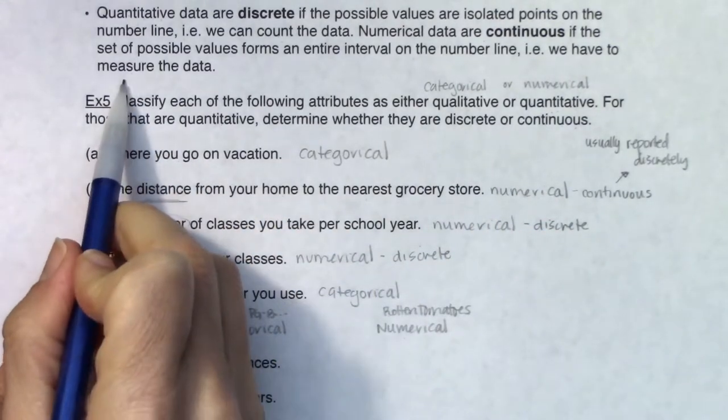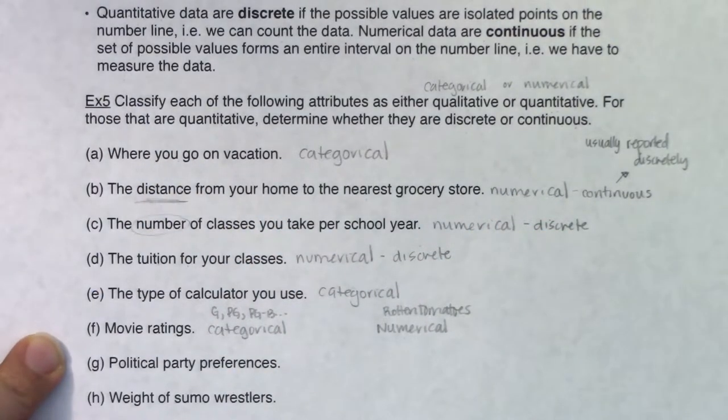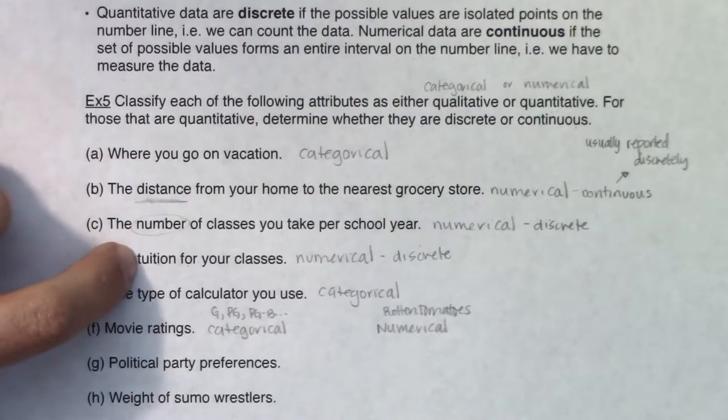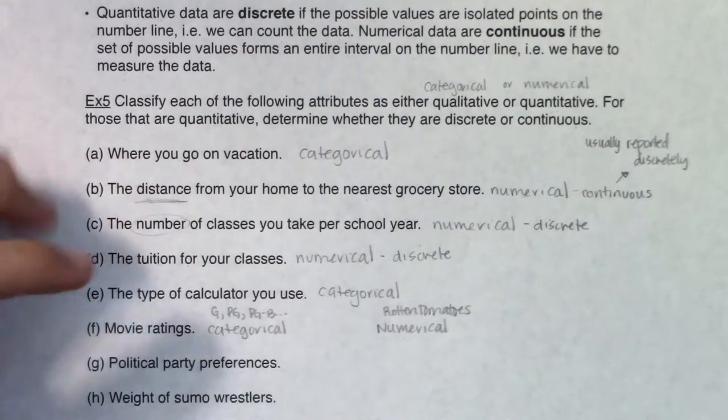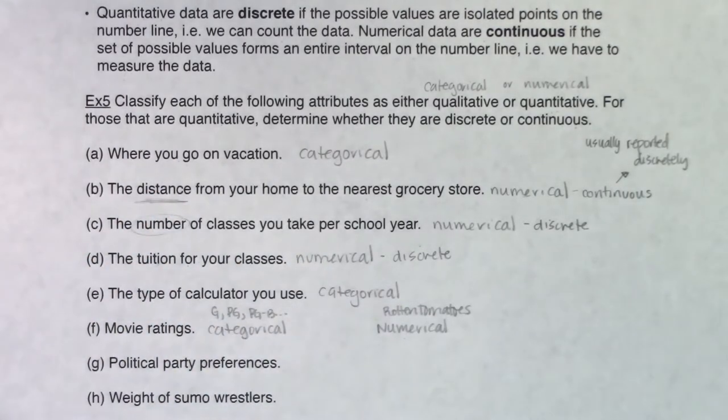The only time I've ever seen anyone measure their money was in that TV show Breaking Bad where Walter White had so much money he had to just start weighing it. Props to you if you get to a point in your life where you could weigh it. In his case, if he was talking about the amount of money he made that year, his would be numerical continuous because he's weighing his money. I'm never going to hit that point in my life, so I'm always going to have money being numerical discrete.